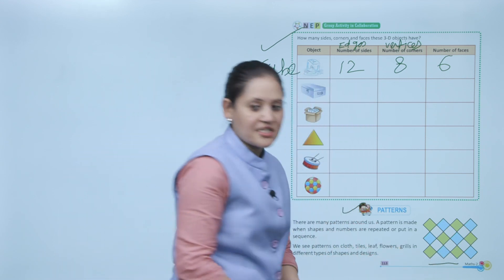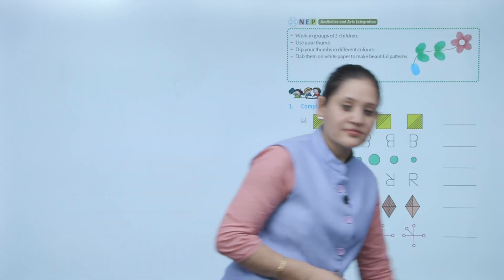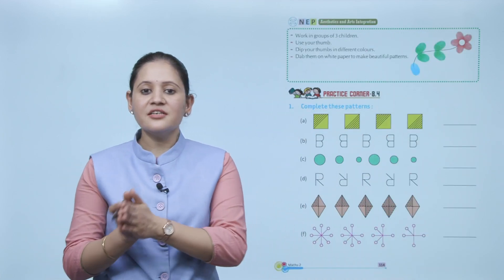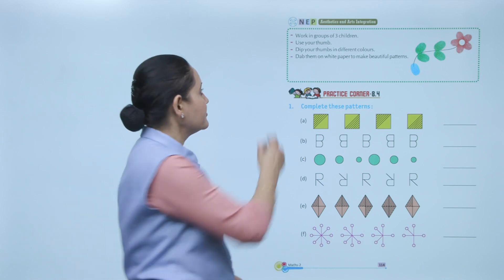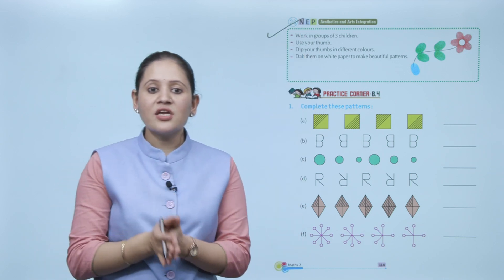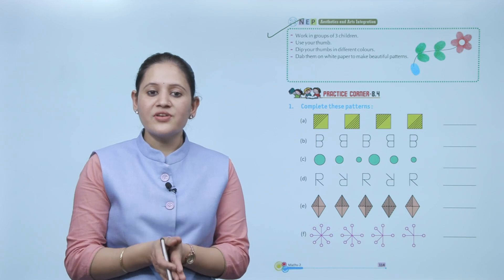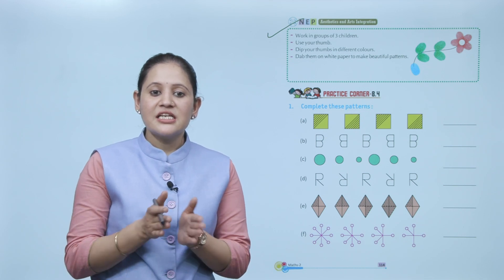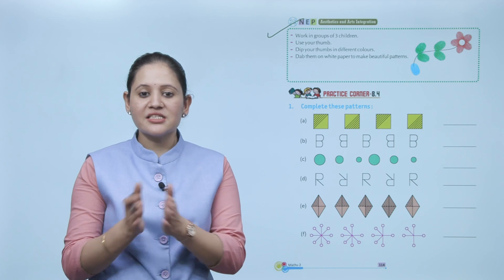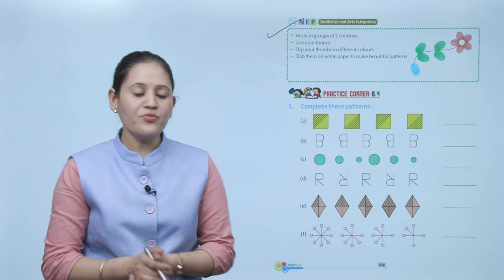Here it is making a pattern. Aesthetics and art integration: working in a group of three children, dip your thumb in different colors and dab them on white paper to make a beautiful pattern. Try this activity. Next is practice corner 8.4.